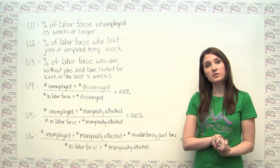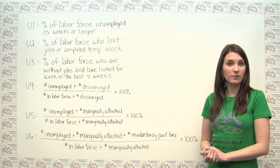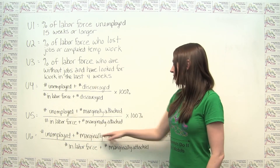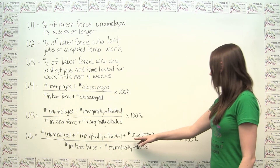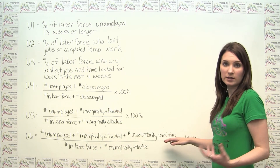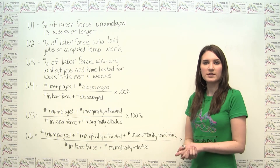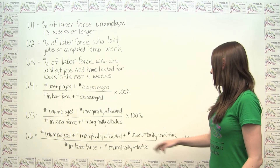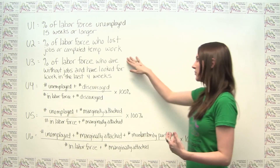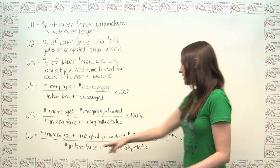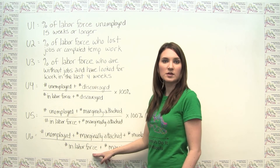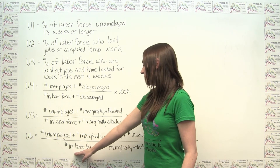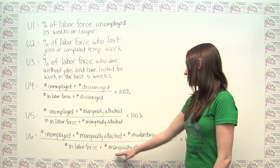Last but not least, we have U6, which is our broadest measure of unemployment. It looks at not only people who are typically unemployed, but also marginally attached workers as in U5, and now also those workers who are involuntarily part-time rather than full-time — meaning they would like to work full-time but can't get a full-time job and are settling for part-time. Note that involuntarily part-time workers are traditionally counted as employed for purposes of U3, so they are already in the traditional labor force. The total relevant pool therefore includes those traditionally in the labor force plus marginally attached workers.